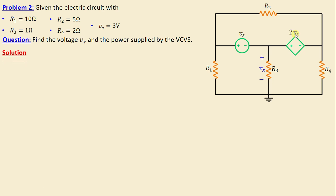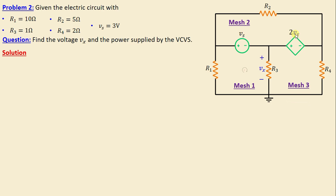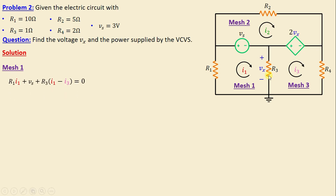We are going to apply the mesh analysis method to solve this problem. First, let's define the number of meshes in this network. It's evident that there are three meshes: mesh one, mesh two, and mesh three. We assign mesh currents: i1 for mesh one, i2 for mesh two, and i3 for mesh three, all chosen in the clockwise direction.